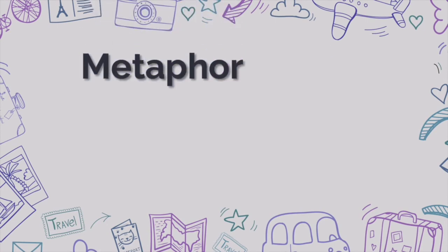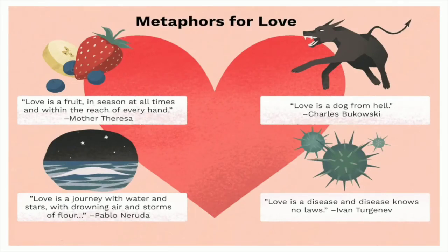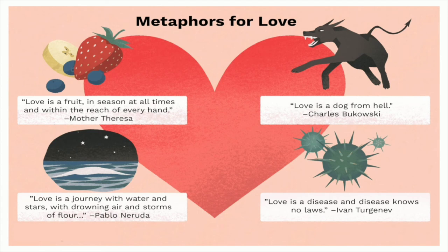The next device: metaphor. Metaphor also compares two things, but it does it more directly, without using 'as' or 'like.' Let's take a look at metaphors for love. Mother Teresa said: 'Love is a fruit in season at all times, and within the reach of every hand.' 'Love is a dog from hell,' said Charles Bukowski. Another metaphor: 'Love is a journey with water and stars, with drowning air and storms of flower,' by Pablo Neruda. And last but not least: 'Love is a disease and disease knows not loss,' by Turgenev.